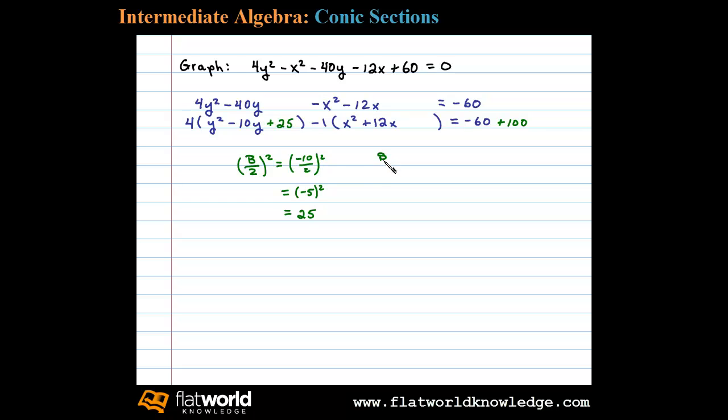Doing the same thing for the terms involving x, we have b = 12. So (12/2)² = 6² = 36. We'll add 36 here and then balance that by subtracting 36 on the other side (that's -1 times 36).